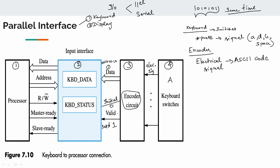This is a control signal. If we look at the interface, we see the registers. There are 2 registers in the interface. KPD is Keyboard Data Register — this is the first register. Keyboard Status Register is the second register.